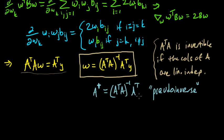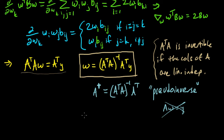Even though we might have liked to solve A W equals Y for W, we would have to invert A to do that, and we can't do that. The pseudo-inverse gives us the closest thing — we could write this expression as the pseudo-inverse of A times Y. So that's the same thing.